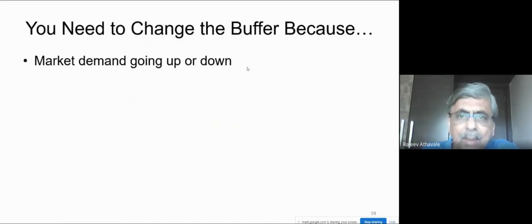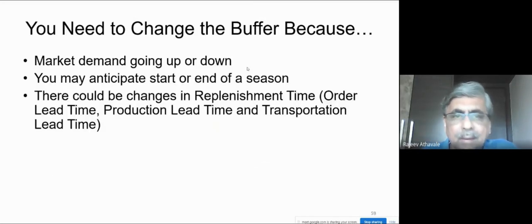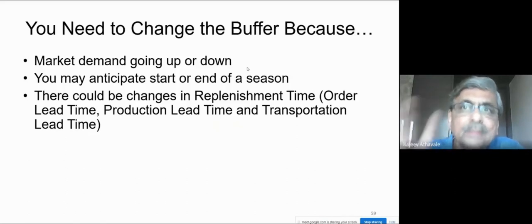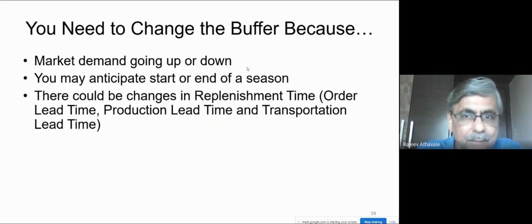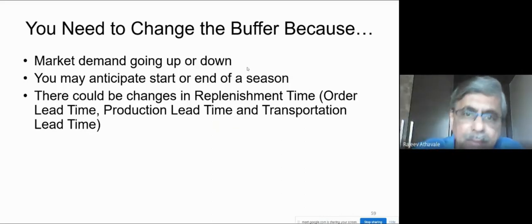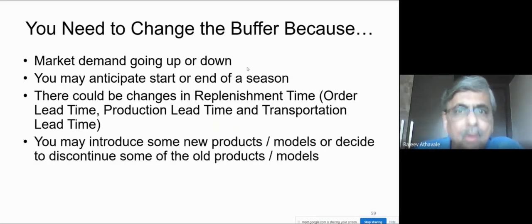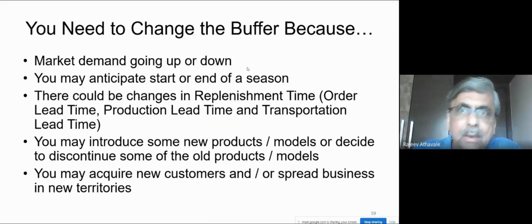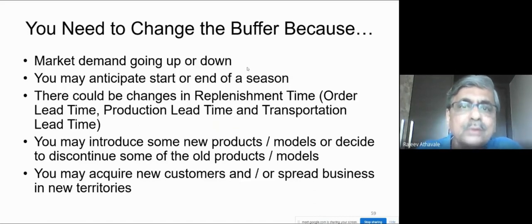The situation is dynamic. Market demand may go up or down; you may anticipate the start or end of a season. In the fashion industry, you must be in the market when the season starts and have very little inventory when it ends. Also, as your replenishment solution implementation matures, replenishment time goes down significantly, requiring buffer level adjustments. You may introduce new products, discontinue old ones, acquire new customers, or expand to new territories — all of which force you to change your buffer level.